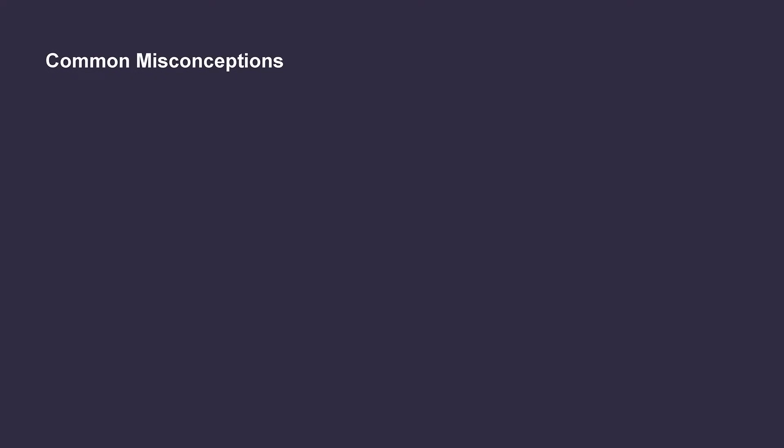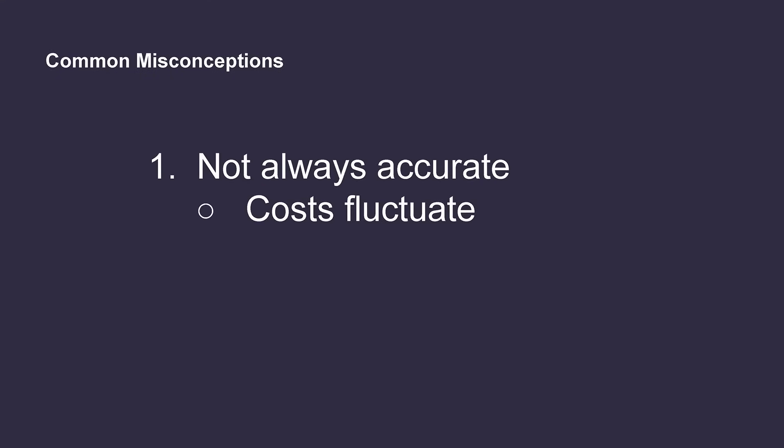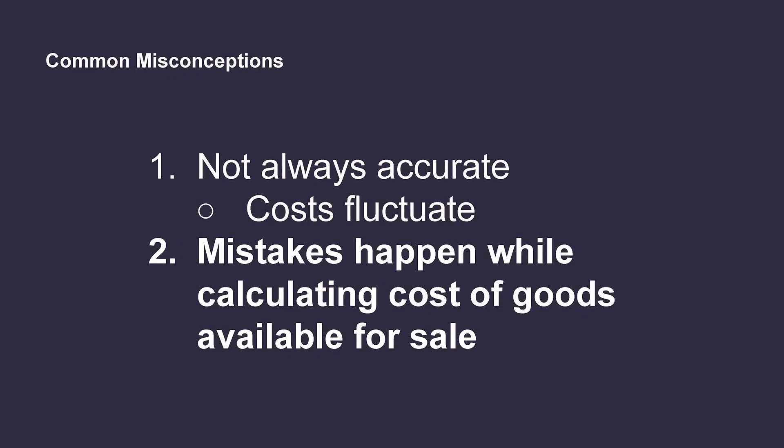Now that we understand a little bit more about the weighted average cost method, let's talk about a common misconception. While there are many advantages to using this method, there can also be some disadvantages that not all companies consider. Weighted average costing does not always result in the most accurate financial information, since the average inventory cost may not be in line with the most recent inventory prices. When companies are working with inventory where the cost fluctuates significantly due to market factors such as inflation, their newer inventory may have a significantly higher cost than their older inventory. As a result, in these scenarios it may be more accurate to use another cost flow assumption method. When calculating the cost of goods available for sale, it's also a common mistake to forget to include all of the new purchases during that period. It's very important that all inventory purchases throughout the period are factored into the calculation.